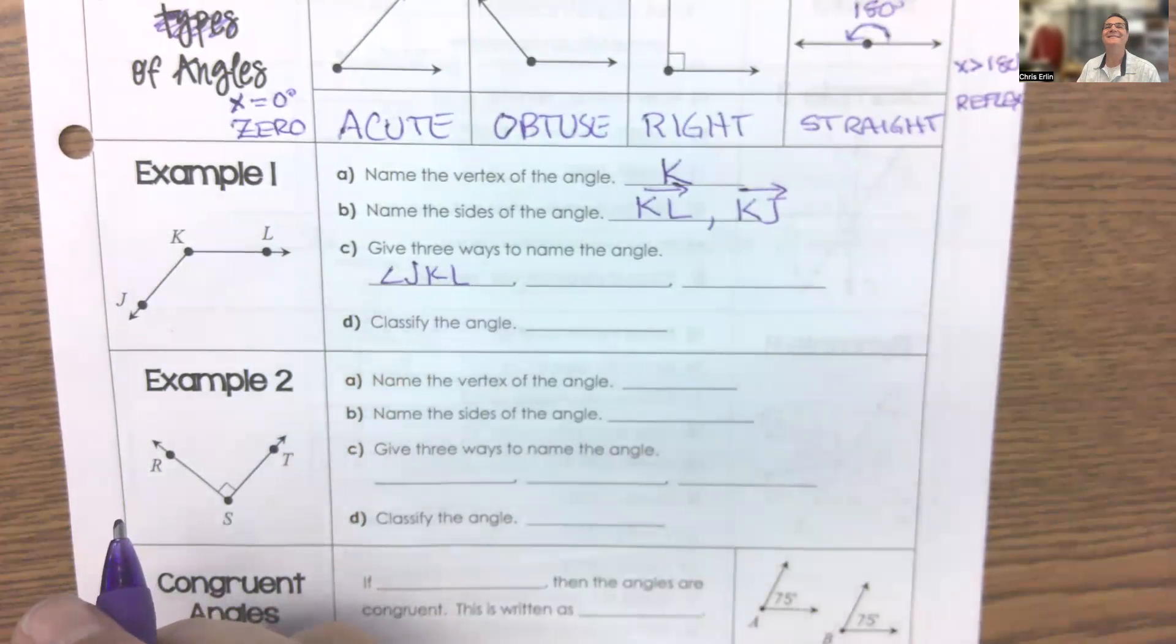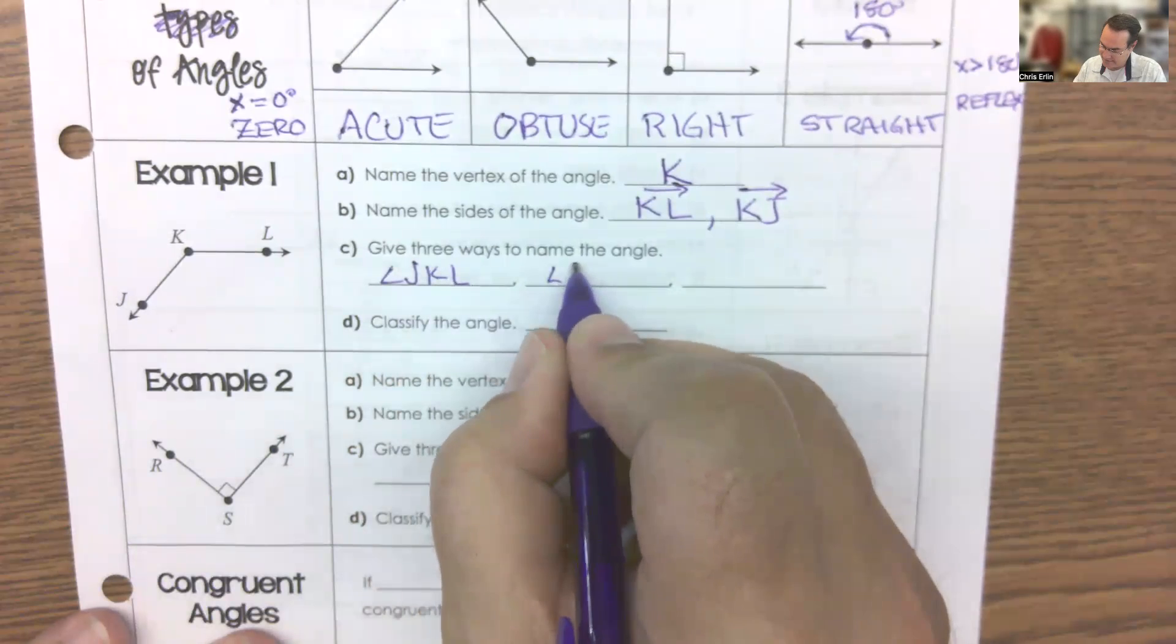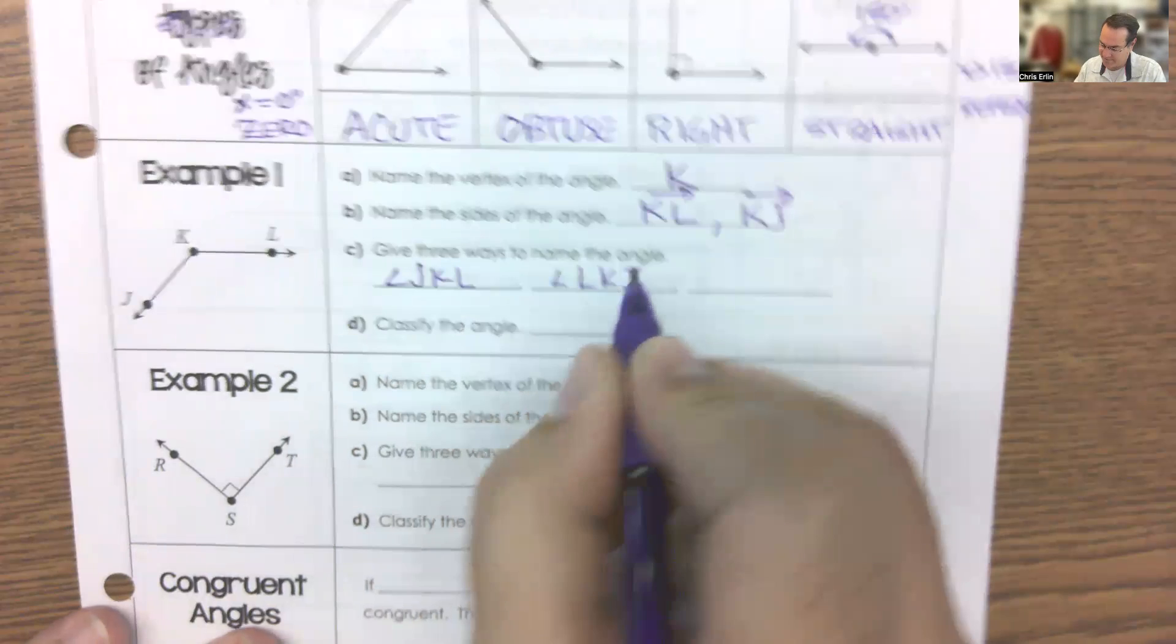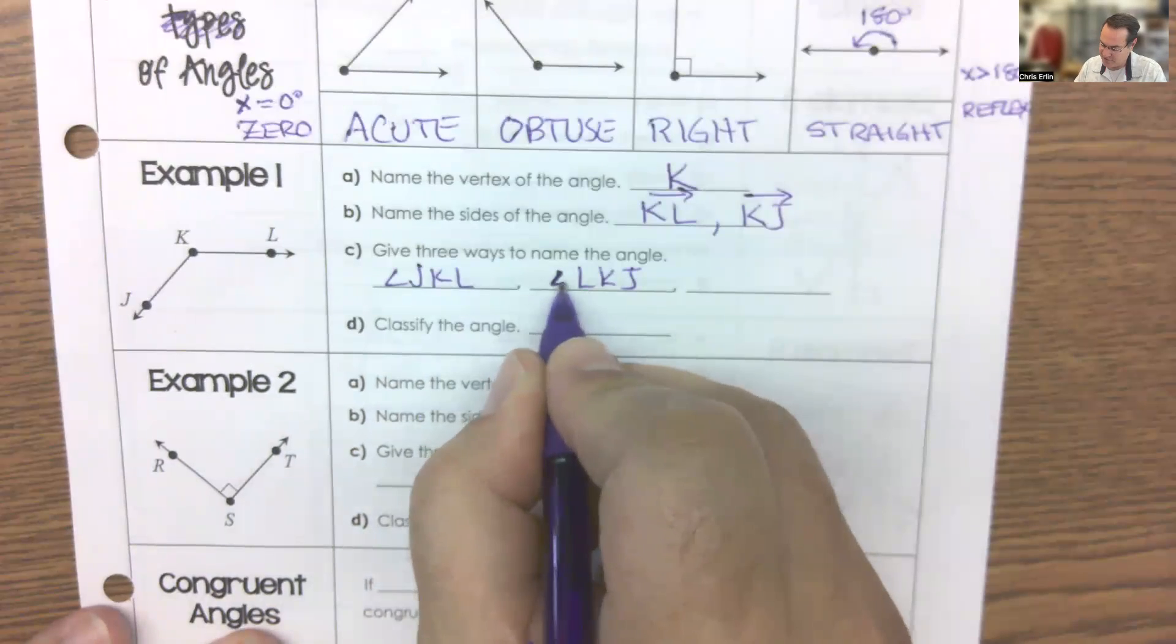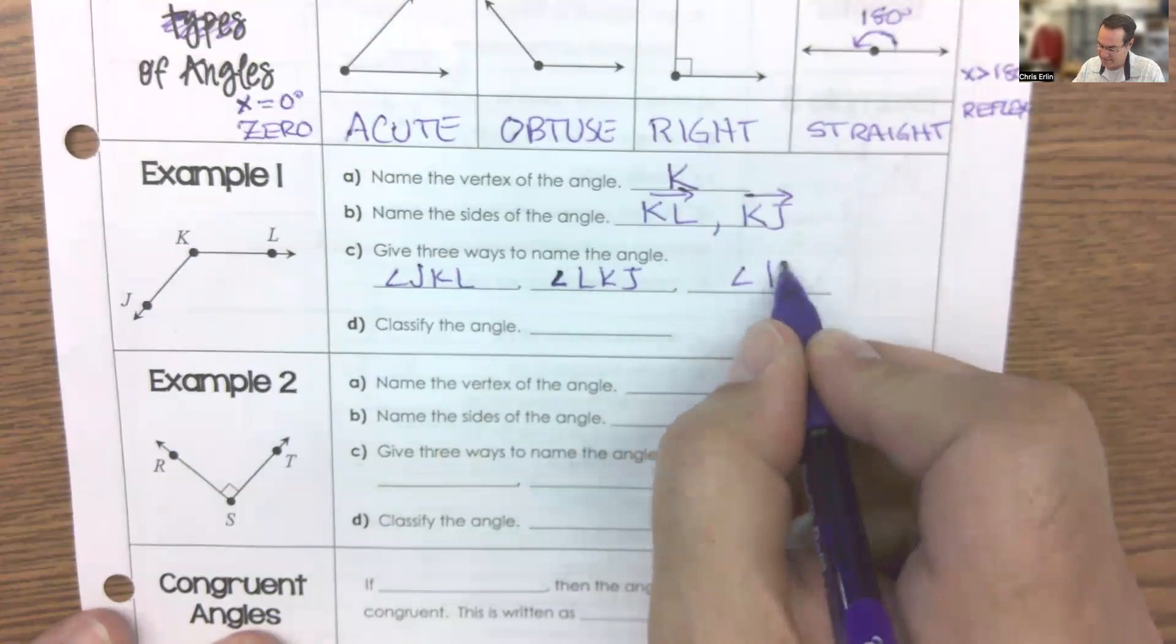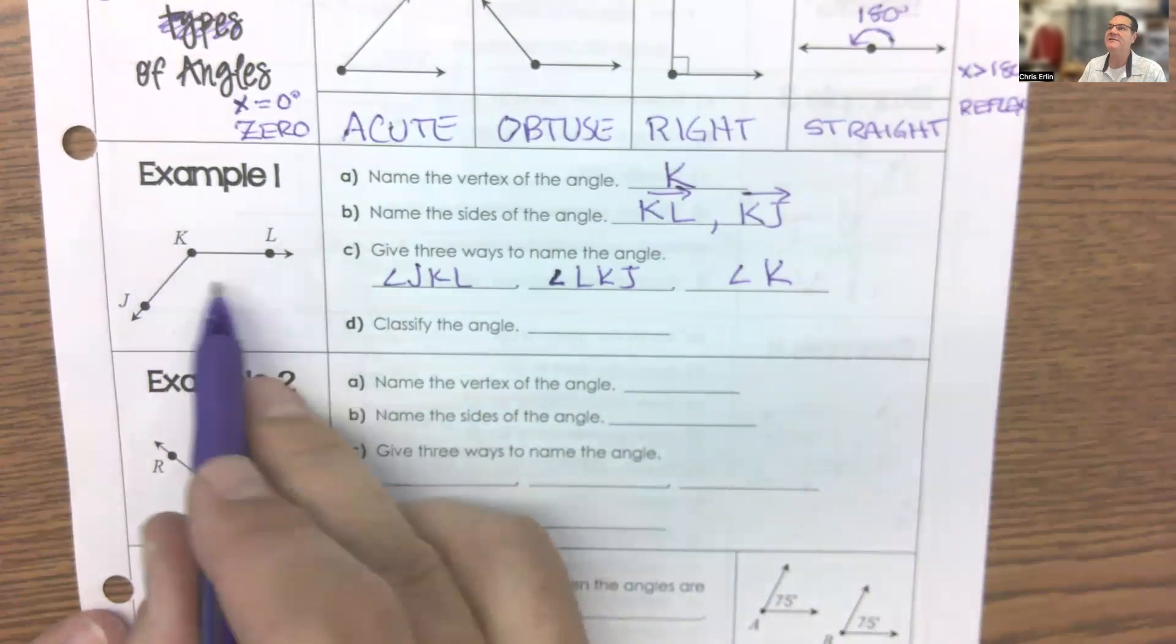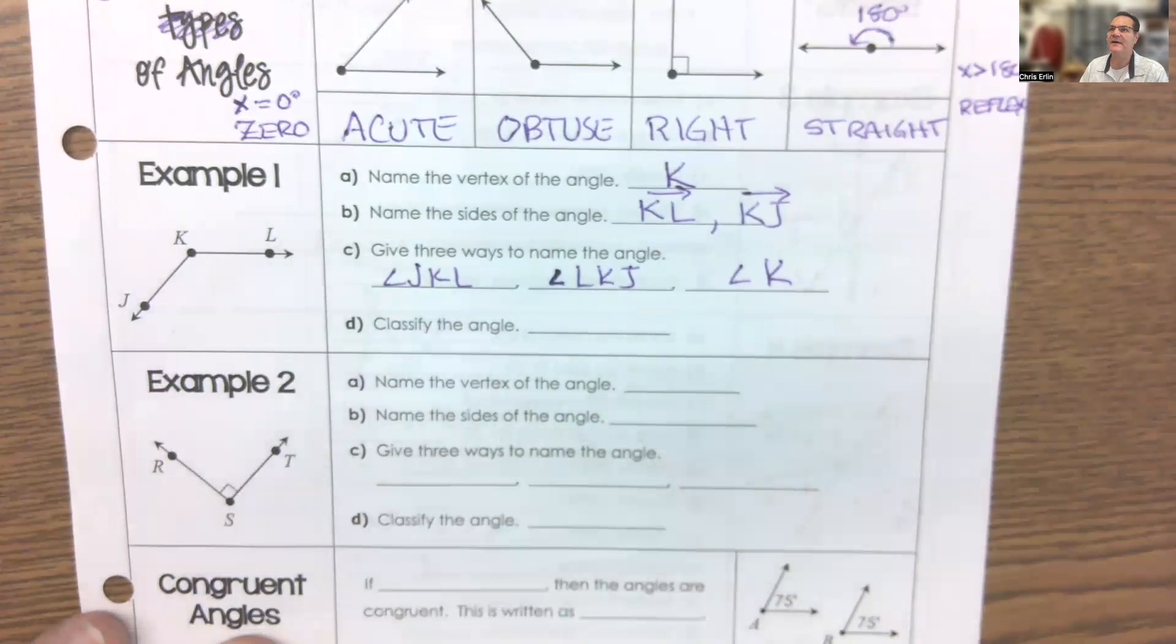Someone new. Yeah, Lila. Good. Angle L-K-J. And I often make my angles look too much like an L, so be careful with that. One more. Theo. Good. We can say angle K this time because it's not ambiguous over what we're talking about. And if this picture were drawn to scale, how would we classify this angle? Obtuse is correct.